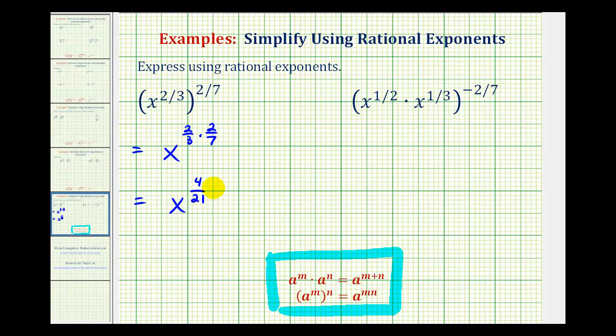In the second example, following the order of operations, we want to simplify inside the parentheses first, and since we're multiplying and the bases are the same, we want to add the exponents.